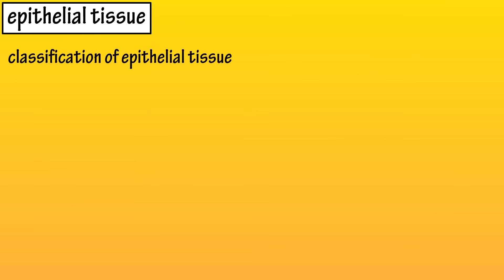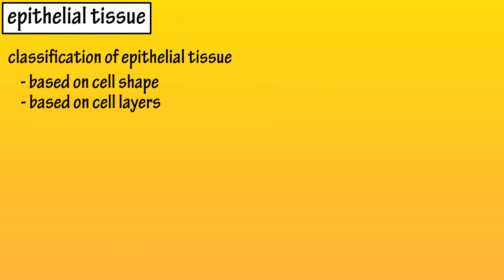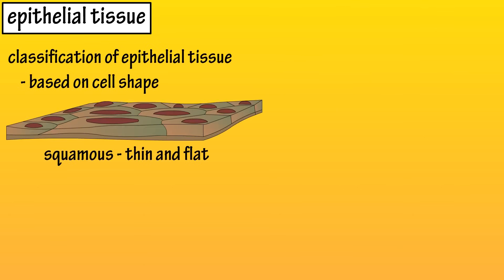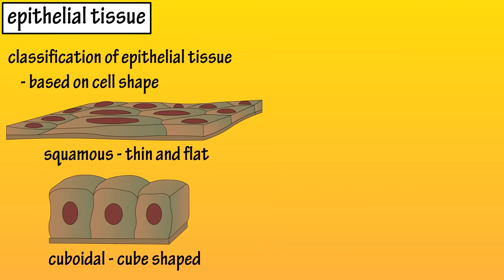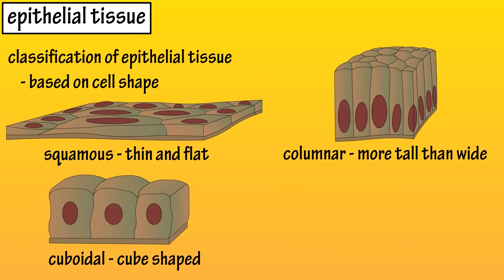Epithelial tissue can be classified based on their cell shape or their number of cell layers. Based on shape, they can be squamous, which are flat, wide, and a bit irregular — these are found in the air sacs in the lungs. They can be cuboidal, which are similar to a cube, about as tall as wide, and have a spherical nucleus. Columnar cells are taller than they are wide and have an oval-shaped nucleus.